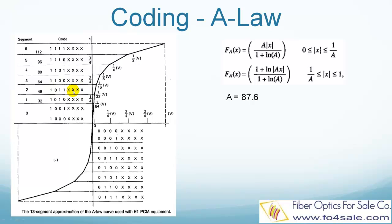These are the code words that identify the voltage level of a sample at some moment in time. Each code word, often called a PCM word, consists of 8 bits. The first bit tells the receiver if the sample is a positive or negative voltage — all PCM words above the origin start with a binary 1, and those below the origin start with a binary 0. The next 3 bits in sequence identify the segment; there are 8 segments above the origin and 8 below. The last 4 bits, shown as XXXX, indicate exactly where in a particular segment that voltage level is located.